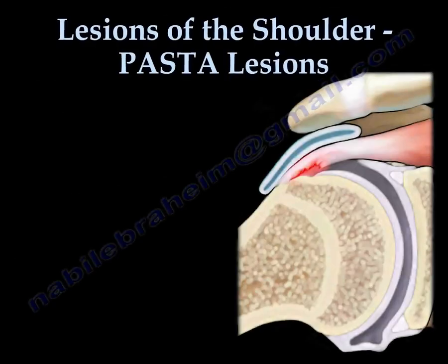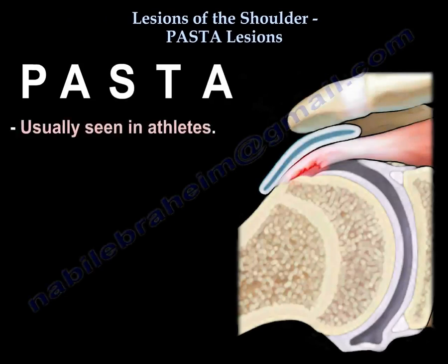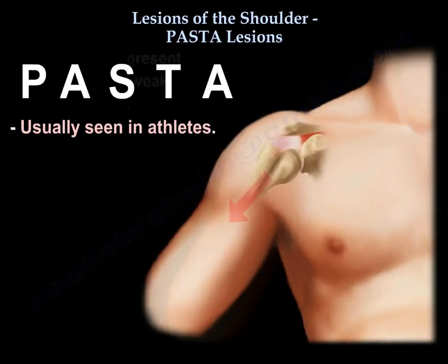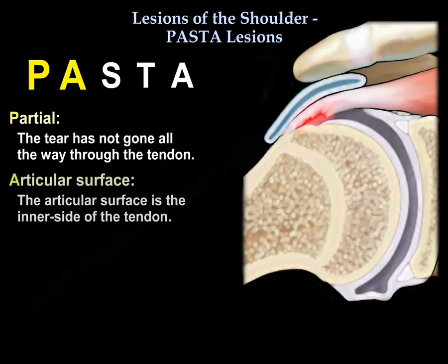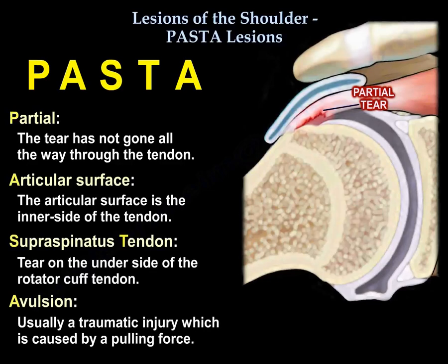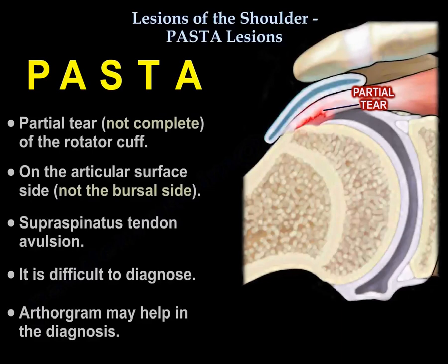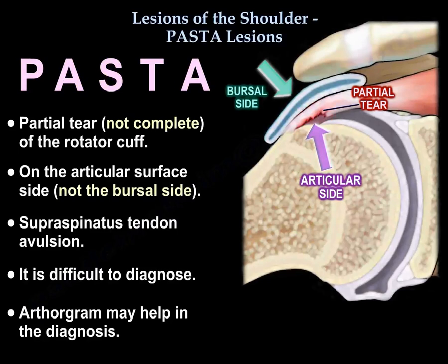Lesions of the Shoulder. We start with the PASTA lesion, which is usually seen in athletes. PASTA stands for partial articular surface supraspinatus tendon avulsion. So it is partial, not complete, and it is articular, not bursal, and it is a supraspinatus tendon avulsion — a partial tear of the rotator cuff.